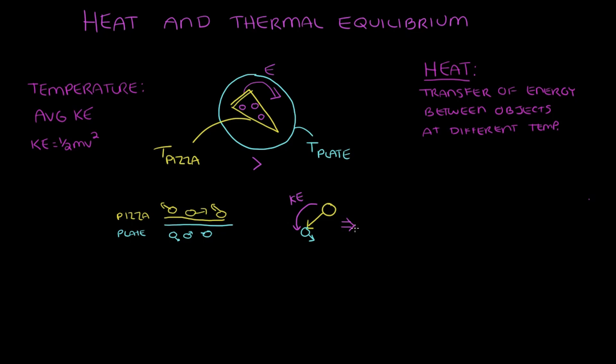When the hotter object's particles transfer some of their energy to the colder object's particles, the hotter object particles have now lost some energy and slowed down. So we can show that by using a smaller velocity vector. At the same time, the colder object's particles have gained energy and sped up. So now this particle in the pizza is at a different velocity than its neighboring particle in the pizza. So when they collide, guess what? We transfer energy again.